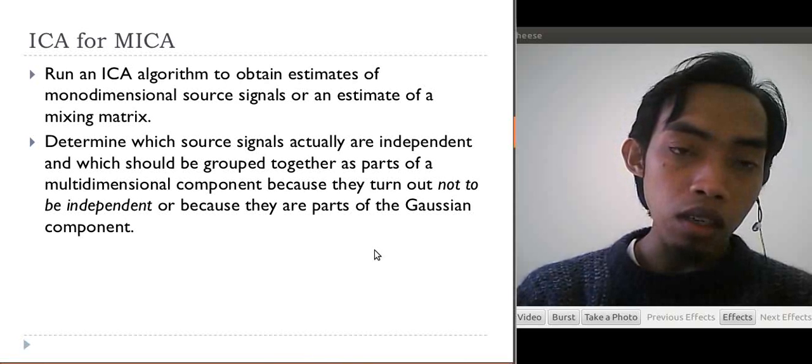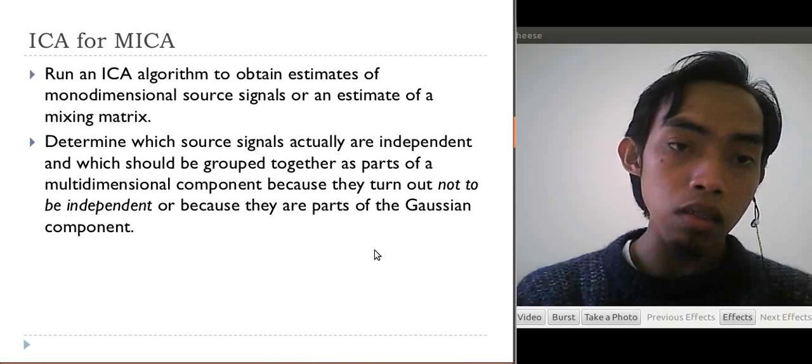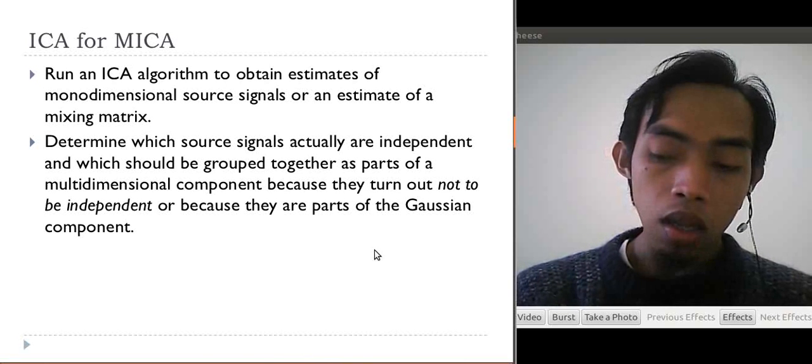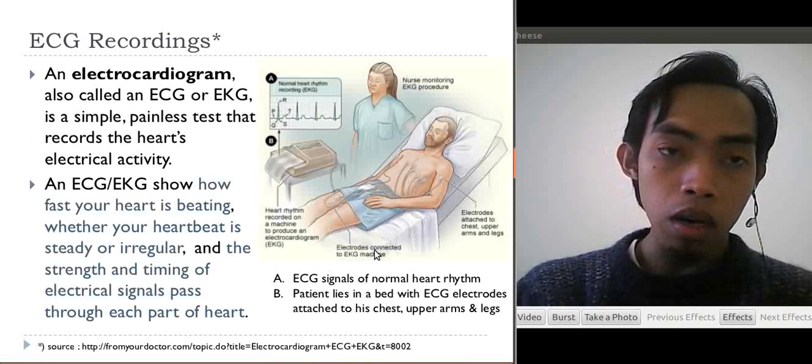Because we use the concept of statistical independence, we assume the Gaussian component. The first step is to obtain the mixing matrix or source signal, and then we group together to obtain the multidimensional component.